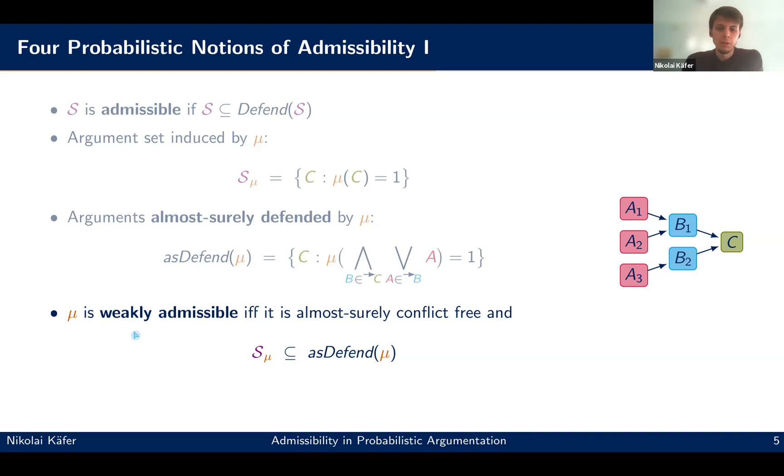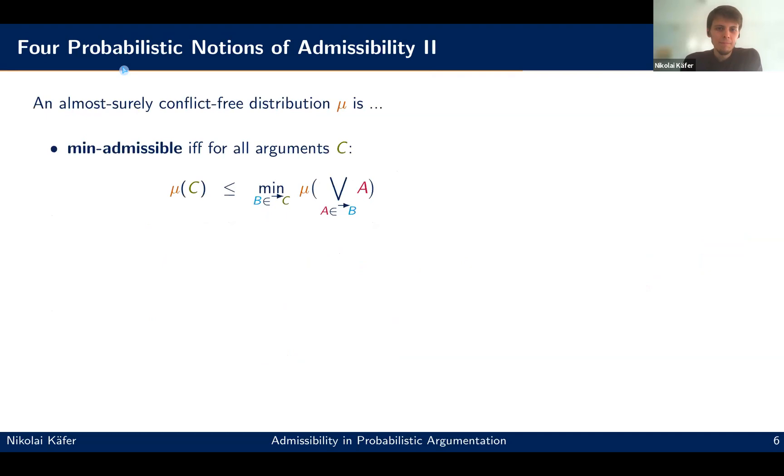Why is it called weakly admissible? That's because basically we only talk about, we only add constraints here for arguments that hold with probability one. So if under a distribution, no argument holds with probability one, then it's trivially weakly admissible. So this is certainly something we want to have, but maybe we want to have even some more strict notions. So in the end, we will have four or three more.